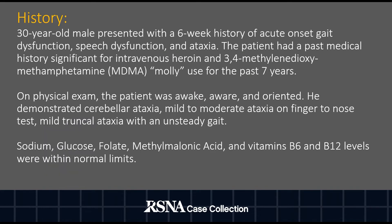We present the case of a 30-year-old male who presented with a six-week history of acute onset gait dysfunction, speech dysfunction, and ataxia. The patient had a past medical history significant for intravenous heroin and MDMA use for the past seven years. On physical exam, the patient was awake, aware, and oriented. He demonstrated cerebellar ataxia, mild to moderate ataxia on finger-to-nose tests, and mild truncal ataxia with an unsteady gait.